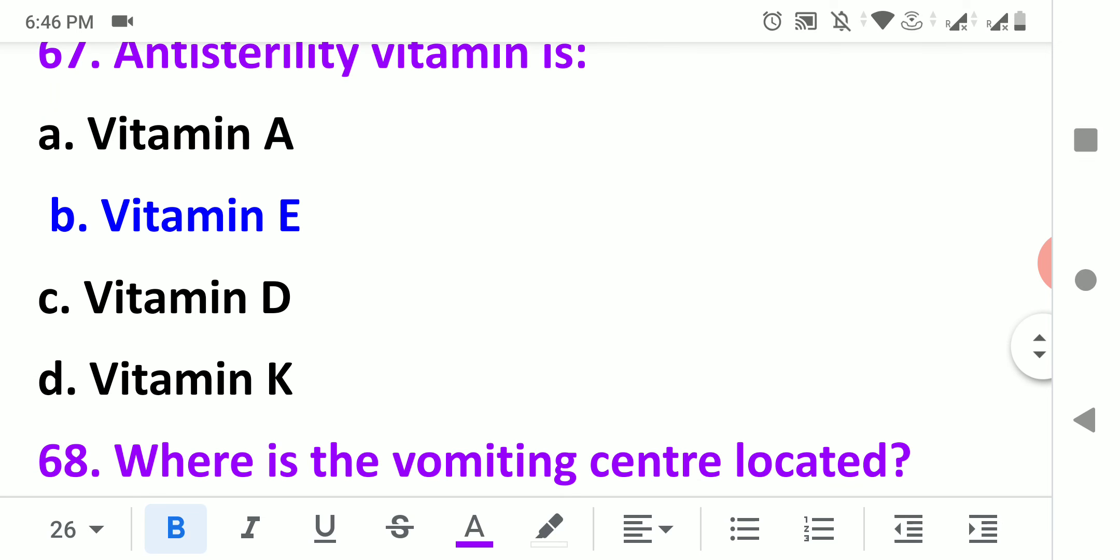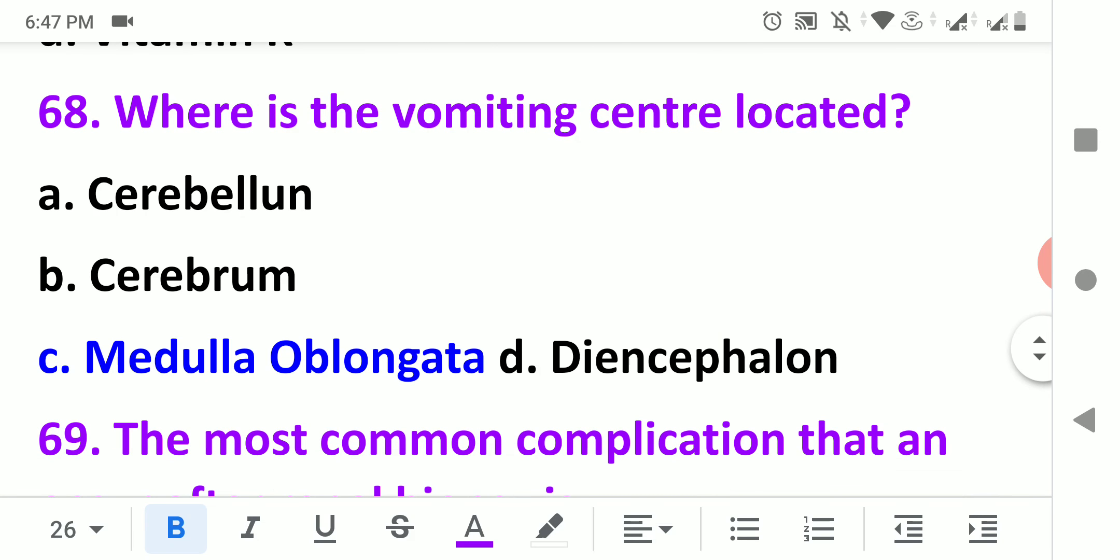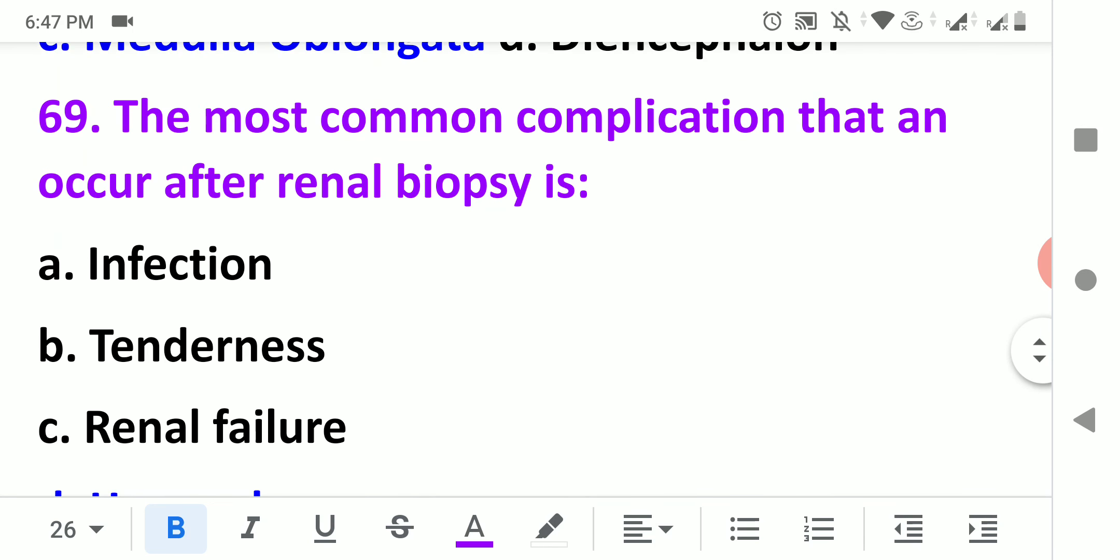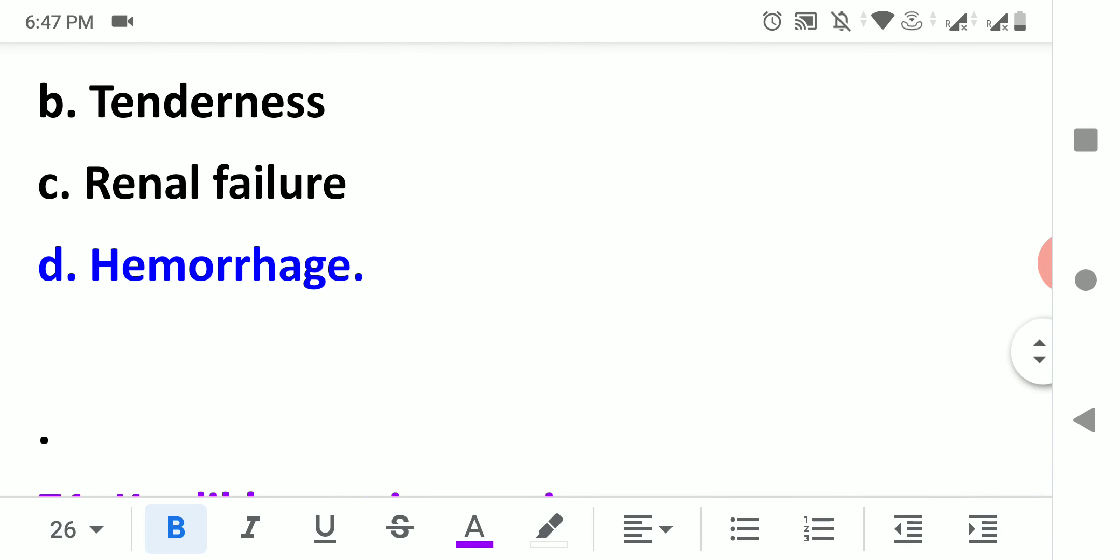One gram of fat gives us 9 kilocalories. Anti-sterility vitamin is vitamin E. Anti-sterility vitamin is also called beauty vitamin. This vitamin protects from free radicals and helps prevent the aging process. Where is the vomiting center located? The vomiting center is located in the medulla oblongata of the brain.